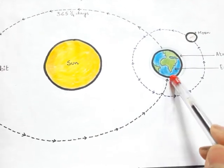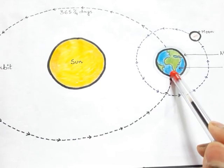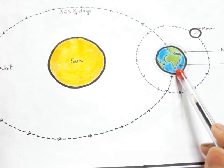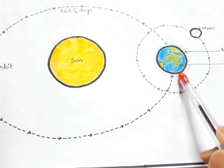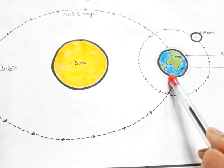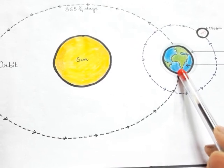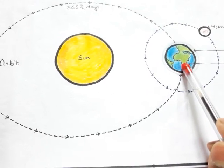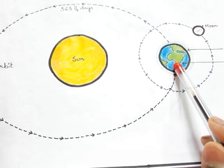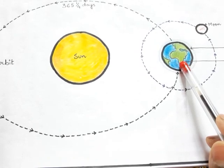Earth is spherical in shape and is called the unique planet. It is the only planet that supports life because it has air, water, and sunshine. Different living beings like plants, animals, and human beings live on Earth.